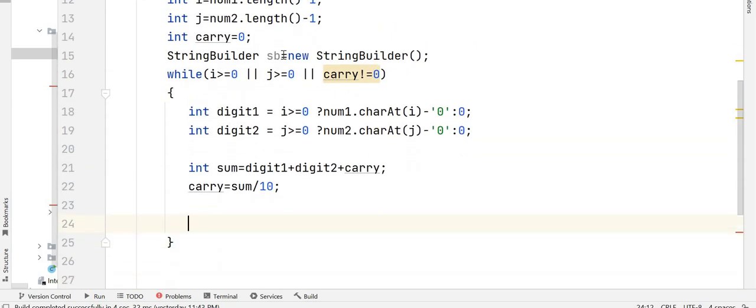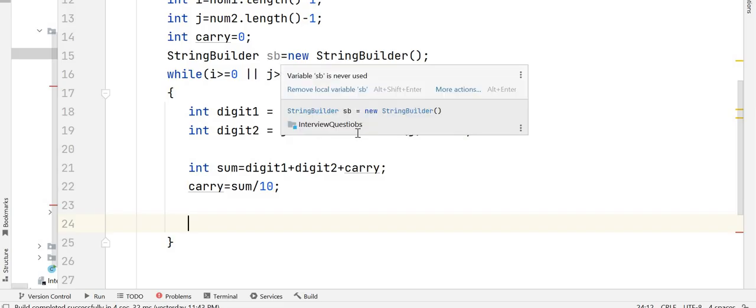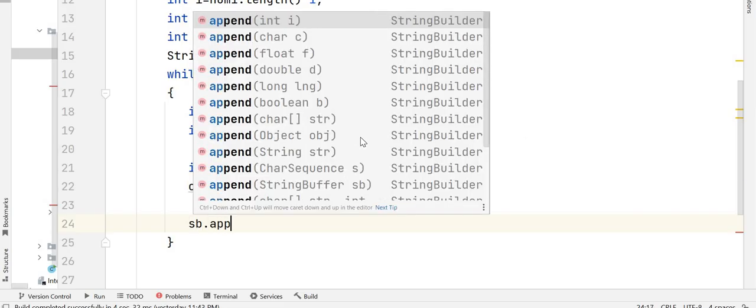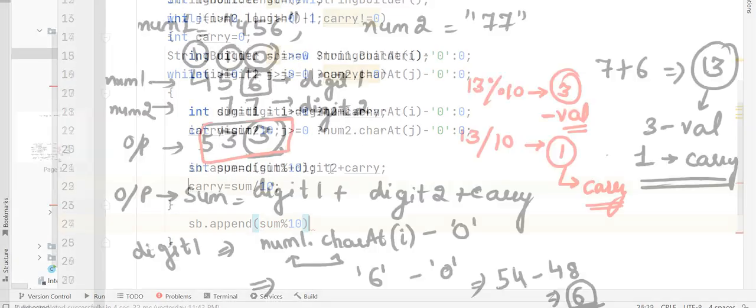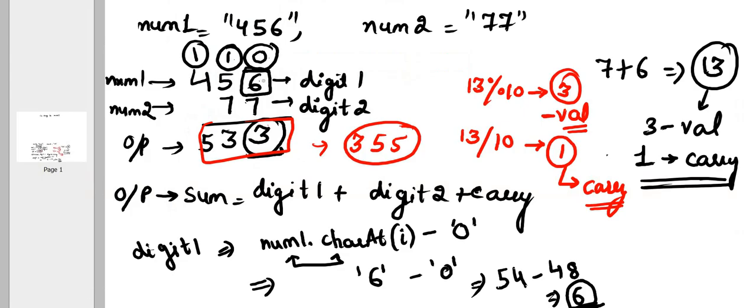So we have taken string builder. So we are going to append the result to the string builder which would be your sum mod 10. What you are going to do? So you have summed up first two digits and their carry.